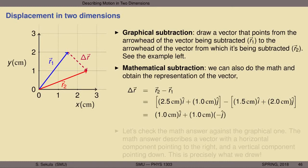I recommend pausing the video and making sure the following answer makes sense to you. When you group together terms with common unit vectors and apply the arithmetic to their coefficients, you should find that the x component of the resulting delta r vector has a length of one centimeter and points in the positive i-hat direction, and the y component also has a length of one centimeter, but it points in the negative j-hat direction — down, against the direction of positive increasing y values.